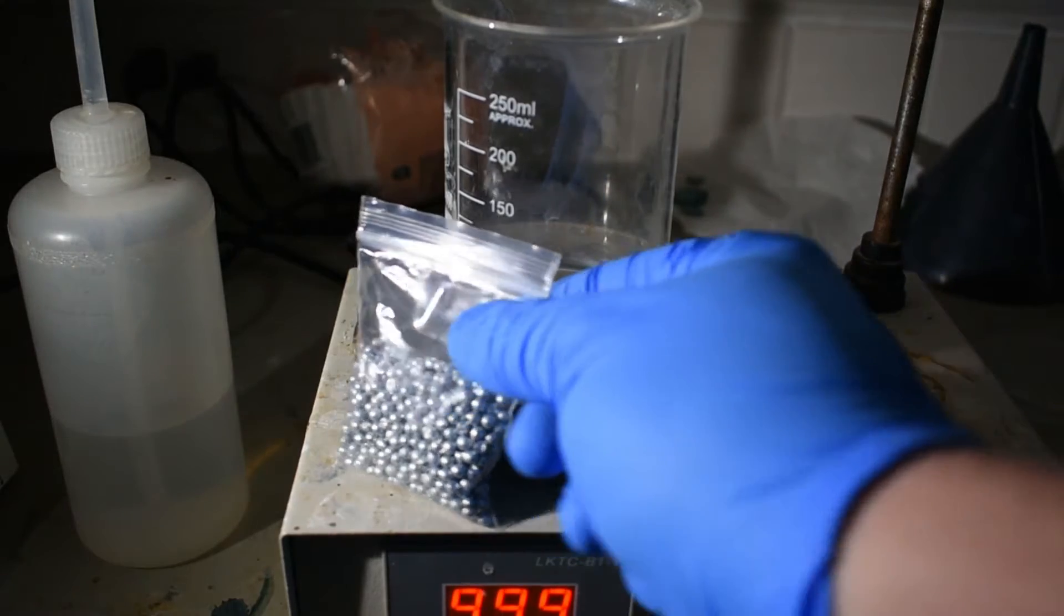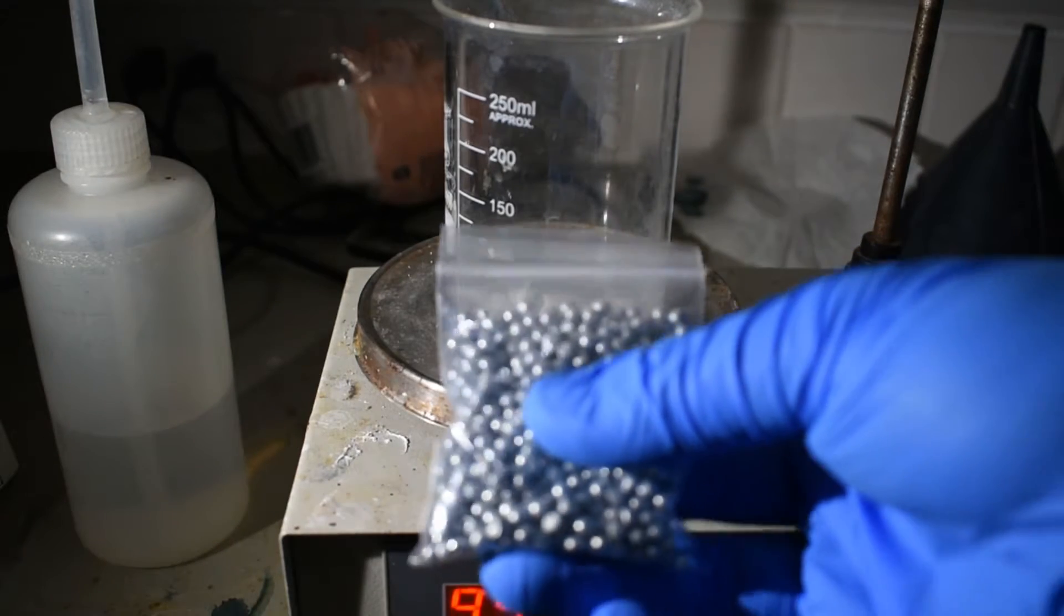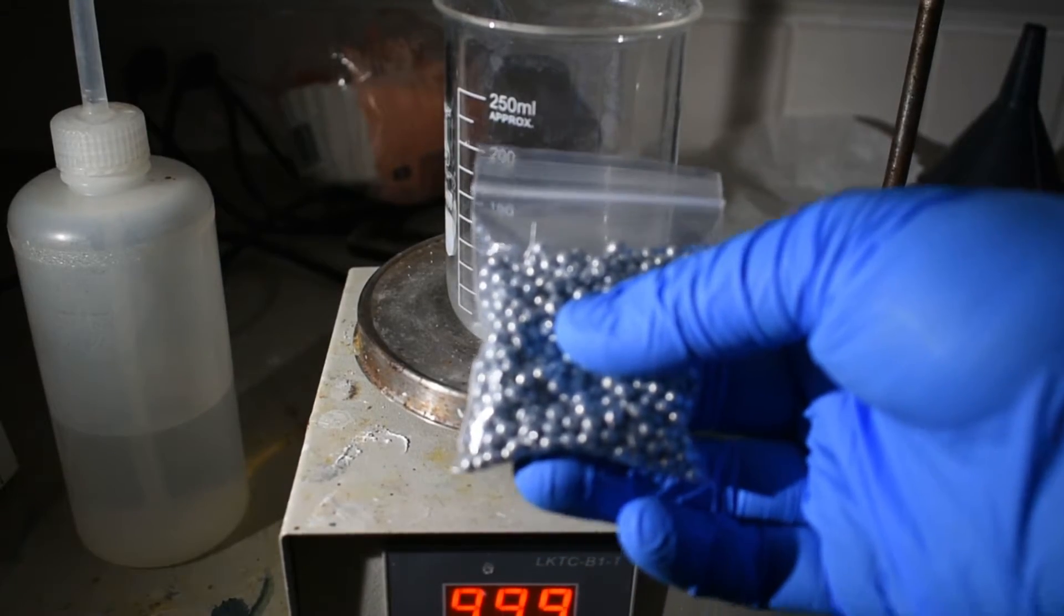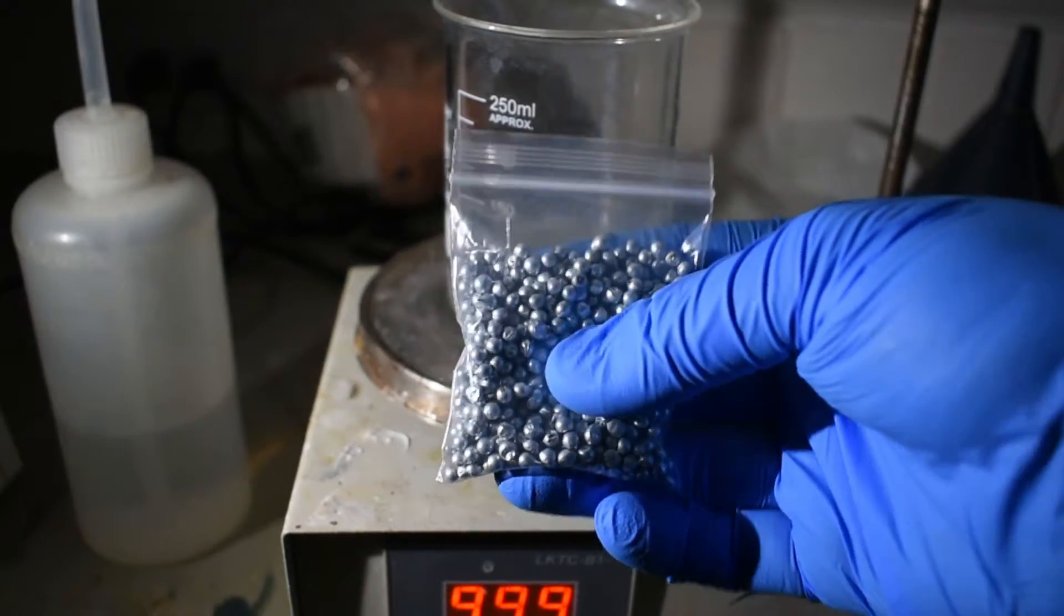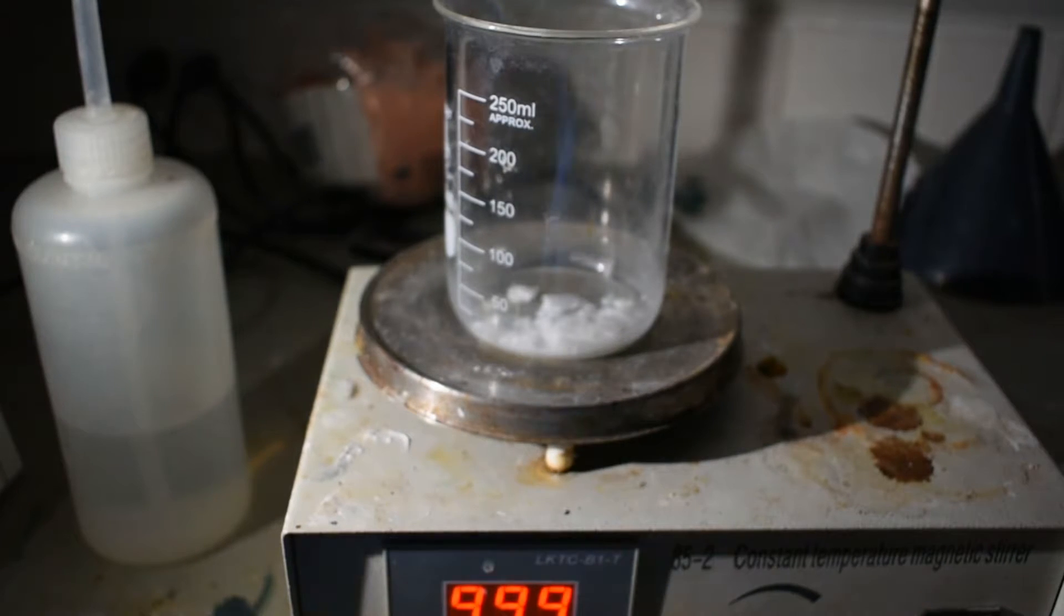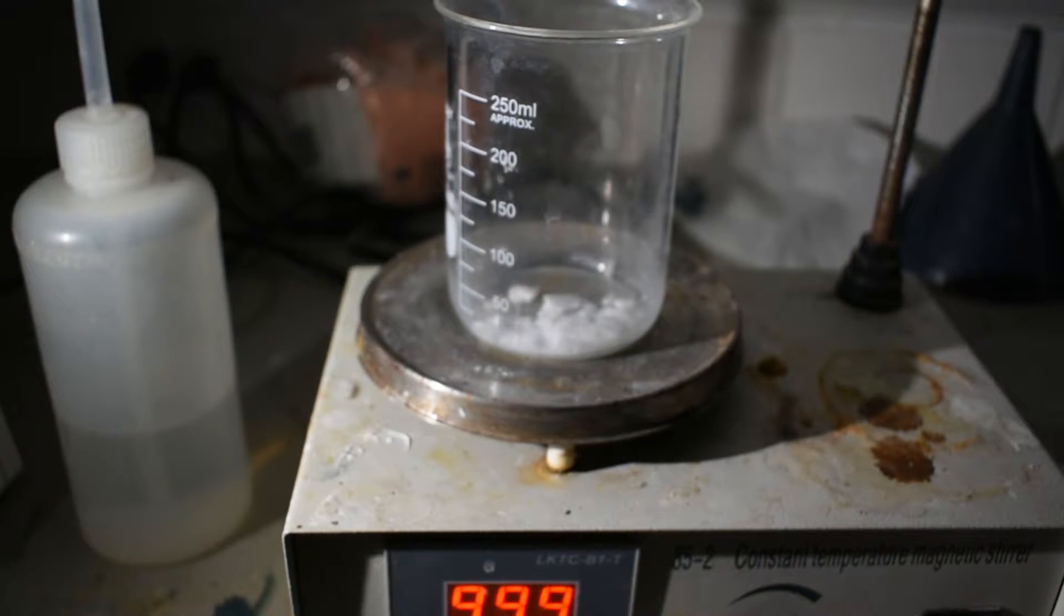And for a reducing agent, I'm going to use zinc. I just have some granulated zinc here, nice, shiny, fresh zinc metal. That will be used to reduce the tetracyanonickelate to the nickel(I) compound.